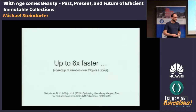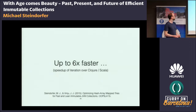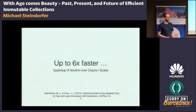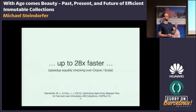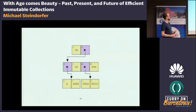Recently there has been much more research into improving these data structures further, because collection data structures are at the heart of what programmers use. Based on that representation, you can make them even faster by exploiting cache locality for iteration, or using structural operations for equality checking to gain additional speedups.